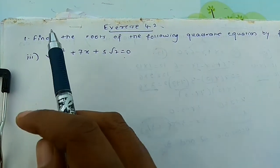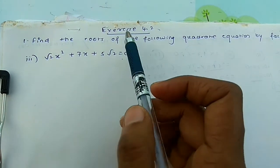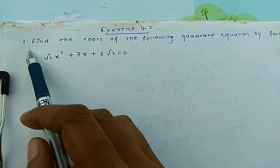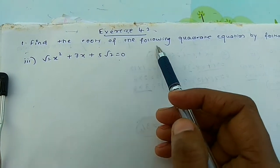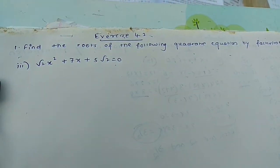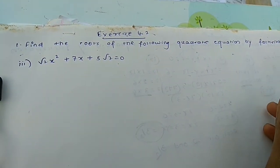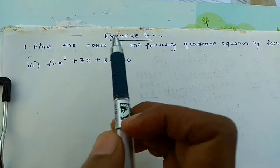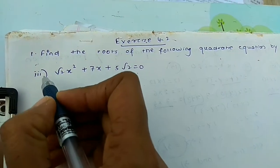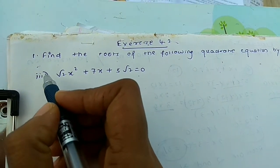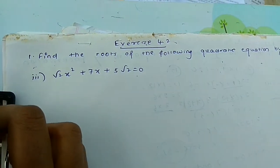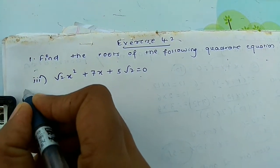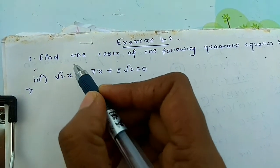Hello viewers, here I am going to explain NCERT Exercise 4.2 from 10th standard. In the first question we find the roots of quadratic equations by factorization. You already know how to factorize a quadratic polynomial by splitting the middle term, so let us follow that method. I am explaining the third question first; videos for questions one and two have already been made.